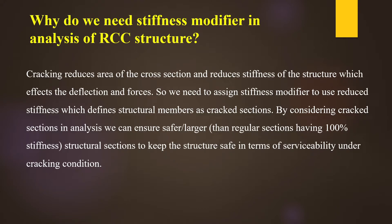This means the cracked cross section is smaller. If the effective thickness of the member is reduced, then the deflection under loads will be increased. So what we do is assign the stiffness modifier for the reduced section and design the structure treating the member as a cracked member, to ensure the member is designed safely compared to using 100% stiffness.